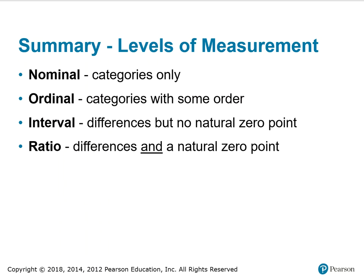In summary: nominal — categories only; ordinal — categories with some order; interval — differences but no natural zero point; and ratio — differences and a natural zero point.